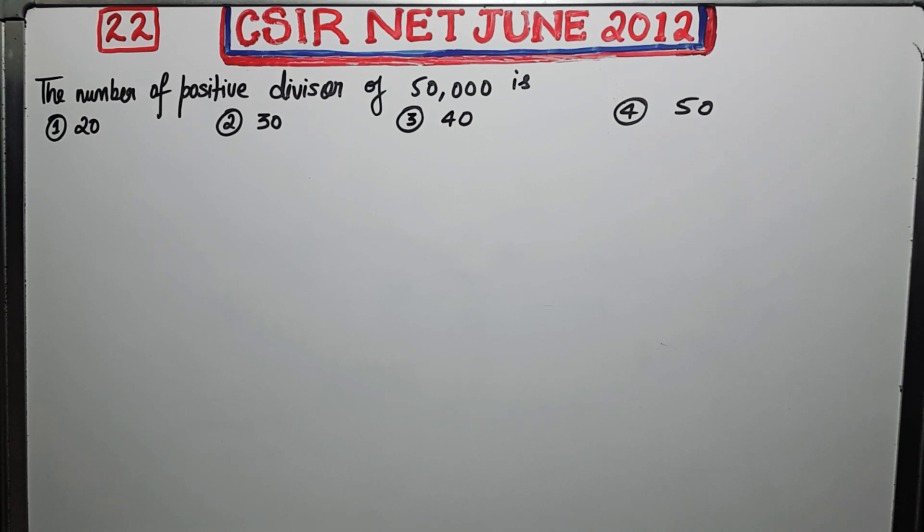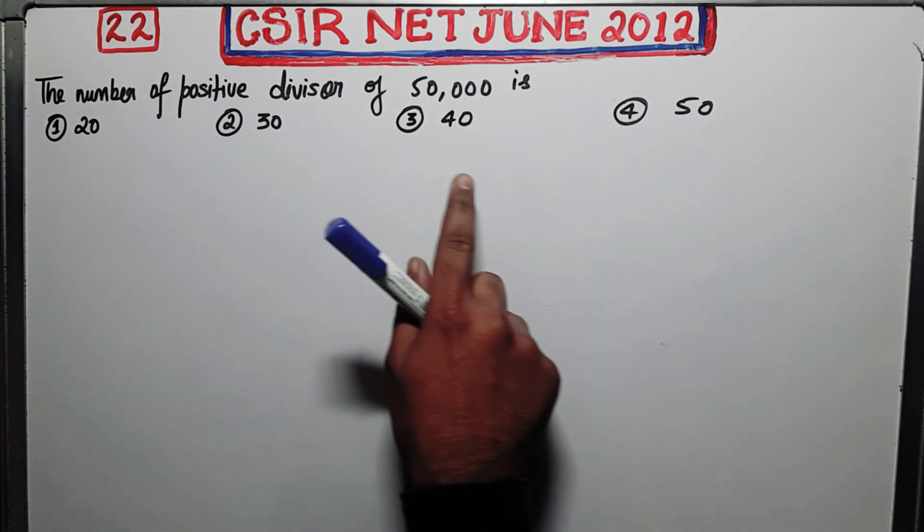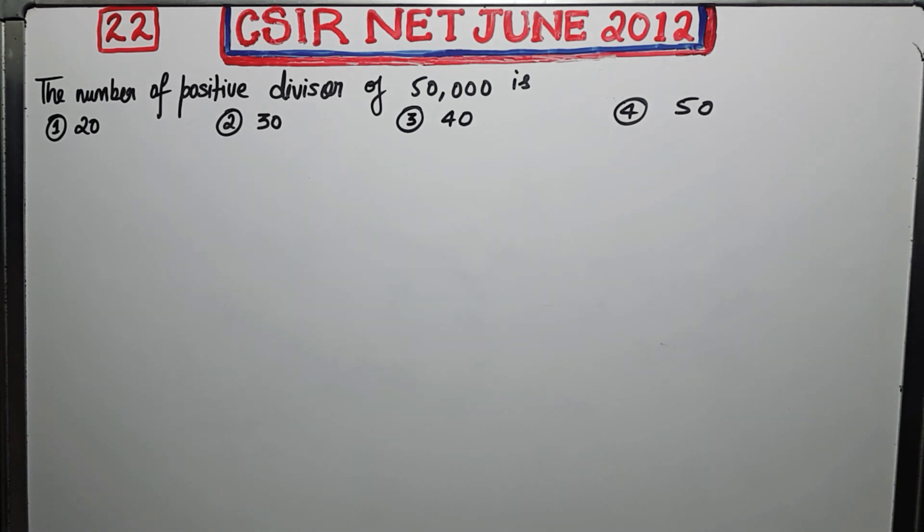Let us firstly read this question. It says the number of positive divisors of 50,000 is 20, 30, 40, and 50. So what do you have to do? You have to find out the number of divisors of 50,000.